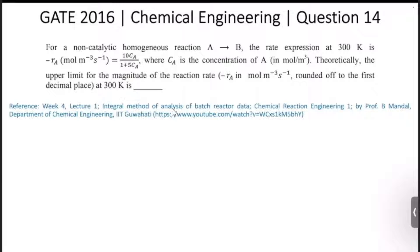C_A is the concentration of A in mole per meter cube. Theoretically, the upper limit for the magnitude of the reaction rate minus r_A in mole per meter cube per second, rounded off to the first decimal place at 300 Kelvin is